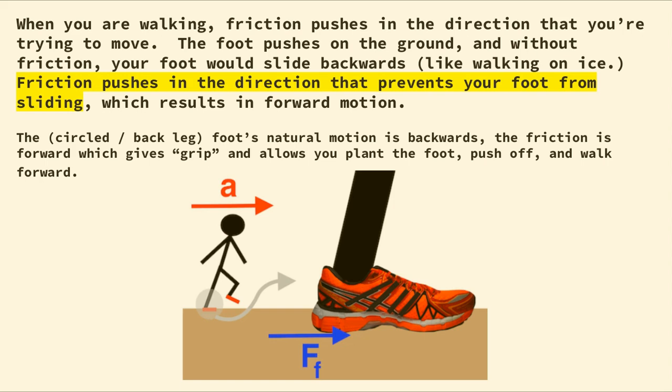Looking at the picture: the person is accelerating to the right, moving to the right, and the force of friction is also to the right. This might seem counterintuitive — we've always said friction opposes motion, and that is still true here. When you did the activity, your foot was going backwards. Friction prevents it from continuing backwards, gives you grip, lets you push off and move forward.